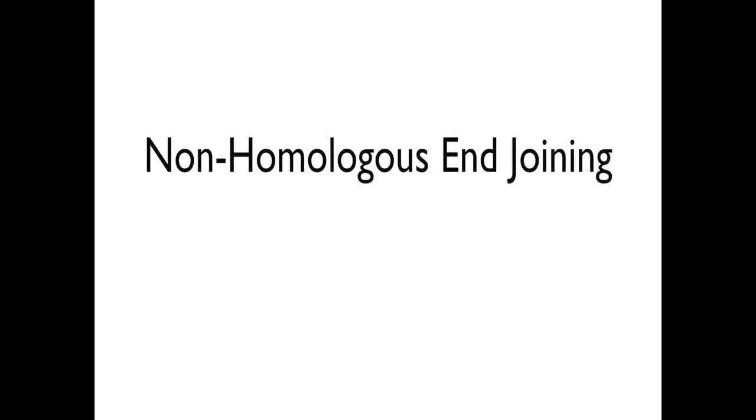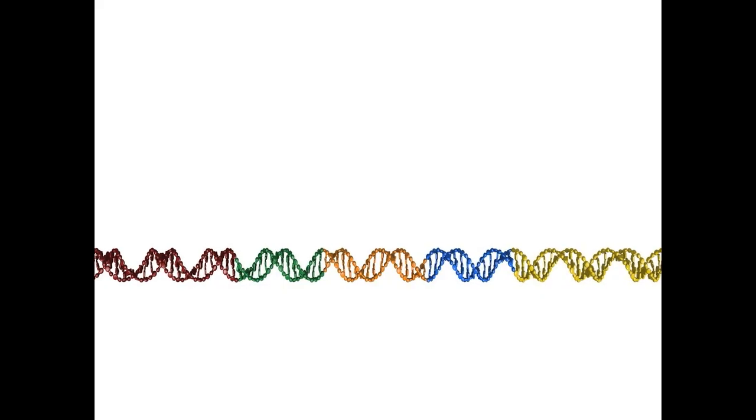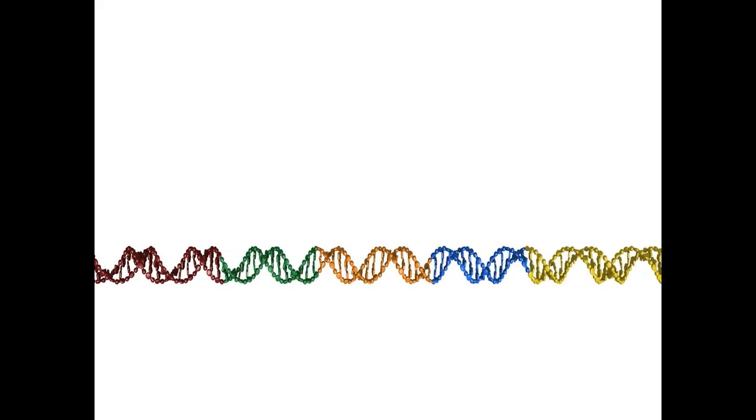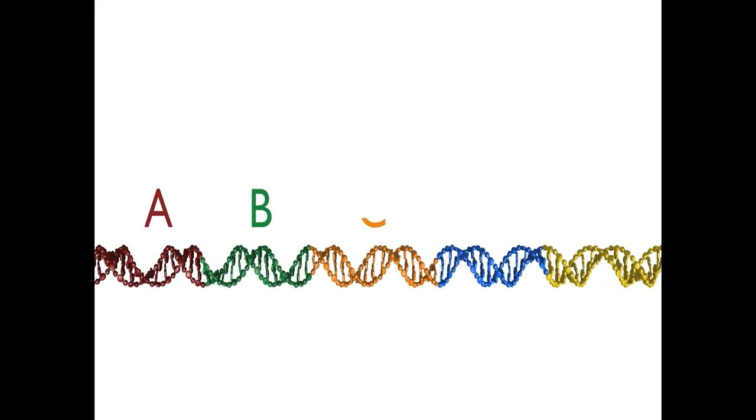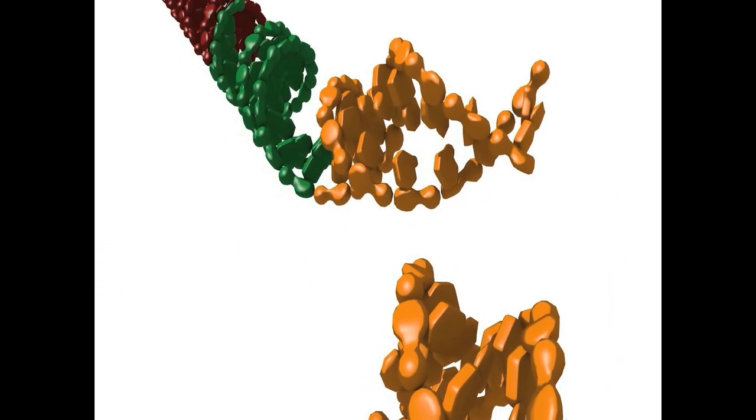To see how a cell repairs a double-strand break in DNA by non-homologous end joining, let's imagine that we have a parental DNA duplex containing the sequence ABCDE. We then imagine that the duplex is broken by a double-strand break in the C region.